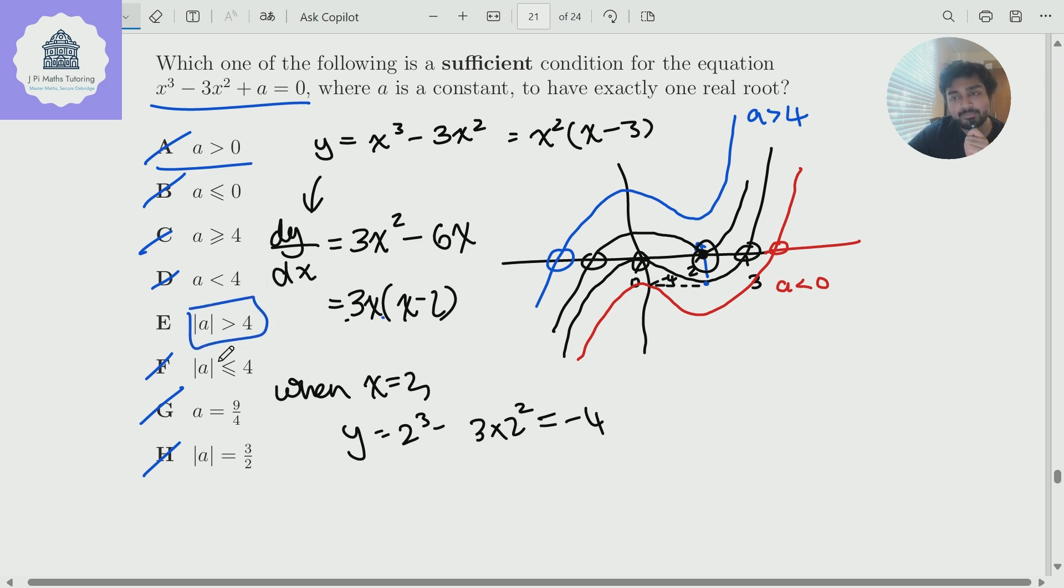The modulus of a is bigger than four. And you might ask, well, this inequality is not the same as this. But that's fine, because the question is asking for sufficient. So if the modulus of a is bigger than four, we can deduce that either a is bigger than four or a is less than minus four. But if a is less than minus four, then a is negative anyway. So if modulus of a is bigger than four, then one of these inequalities will be true. And so the cubic will have one real root. And therefore, we get our answer.